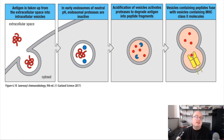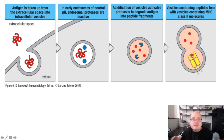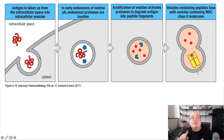Antigen is taken up from extracellular spaces — bacteria, fungi, anything that sort of lives outside the cell or pieces of them. It could be whole antigens or whole parasites. The idea is that they're taken up into endocytic compartments. This might be endocytosis, it might be phagocytosis — all the different ways we've talked about cells taking things in.